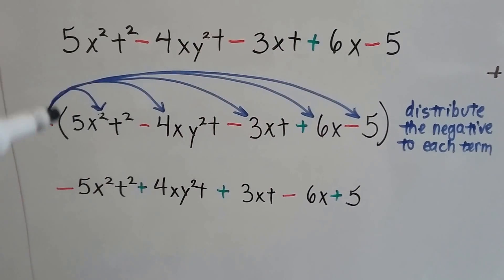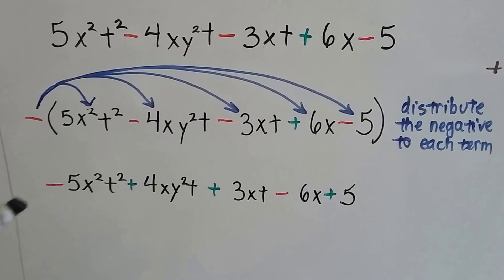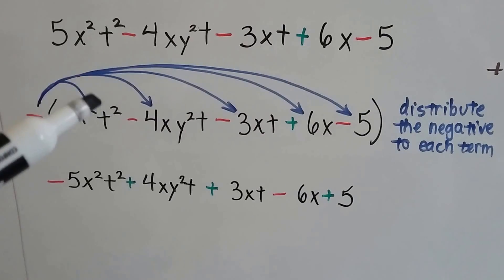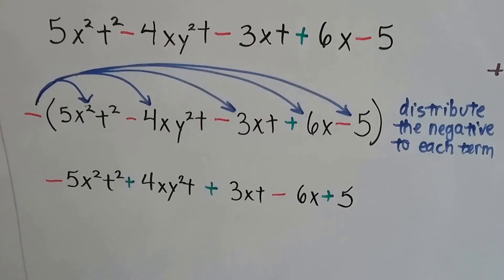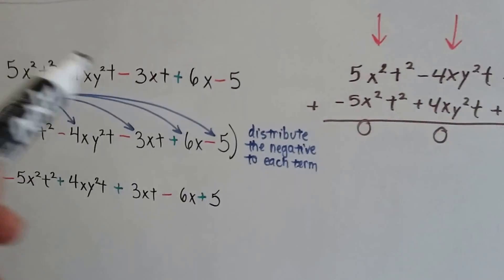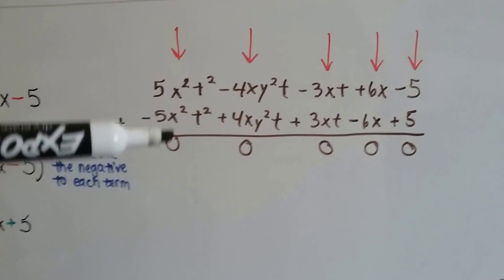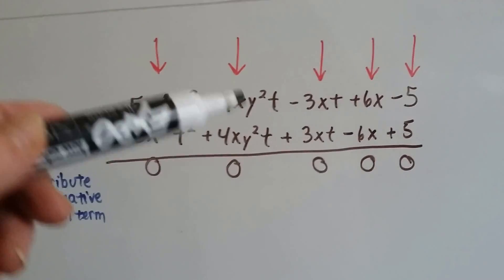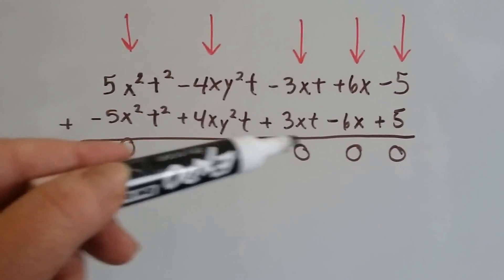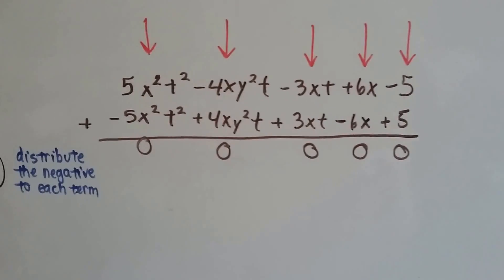You can look at it as distributing the negative into it, if that's what you need to do, or just changing the signs. When we add this first original one to its additive inverse, we create a zero pair that cancels out, another zero pair that cancels out, another one, another one, and another one. We get zeros. So the whole thing equals zero.